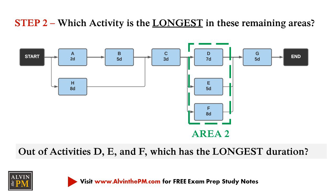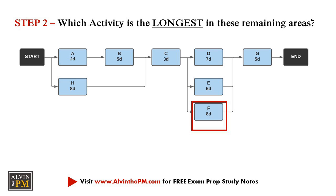Out of the three activities in area 2 — D, E, and F — which has the longest duration? The correct answer is activity F, since it has a duration of 8 days and is longer than activity D and E.